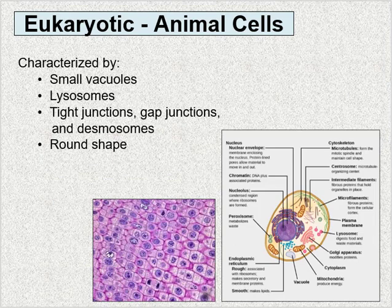Animal cells will be round in shape and are characterized by small vacuoles — much smaller than the central vacuole in a plant cell, which takes up over half the cell. Animal cells also have lysosomes, which are like the cell's garbage disposal. They contain digestive enzymes that dispose of different types of biomolecules and even worn-out organelles.